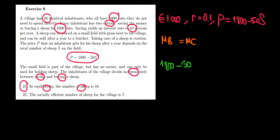What is the marginal cost? The marginal cost is the opportunity cost of not buying a sheep. The opportunity cost is to put the money in the bank at 10 percent interest rate.